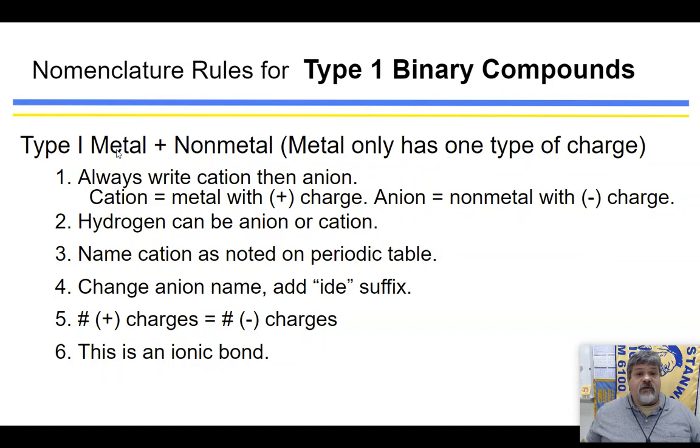With type 1, the first element will always be a metal and the second one will be a non-metal. What makes it a type 1, not a type 2, is that the metal only has one type of charge. Now you'll be able to know which ones have one type of charge if you turn to page 12 in your packet. You'll scroll down and you'll see that the ones that have a white background that have a positive number in there are the metals.